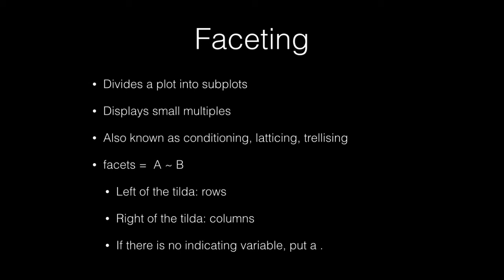Another way to modify your graphs is through faceting. This option allows you to divide a plot into subplots and display small multiples. It is also commonly referred to as conditioning, latticing, or trellising your graphs. The basic format of faceting is as follows: to the left of the tilde, reference which variable you want as your rows; to the right of the tilde, reference the variable you want as your columns. If you don't want to put a variable, put a period instead of leaving the side blank.